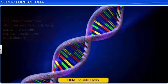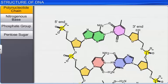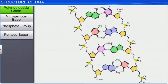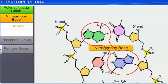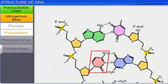Let us now learn about the chemical structure of a polynucleotide chain present in the DNA double helix. The polynucleotide chain is made up of three components: a nitrogenous base, a phosphate group, and a pentose sugar, which is deoxyribose. The nitrogenous base is of two types: purines and pyrimidines. The purines comprise adenine and guanine, while the pyrimidines comprise cytosine and thymine.